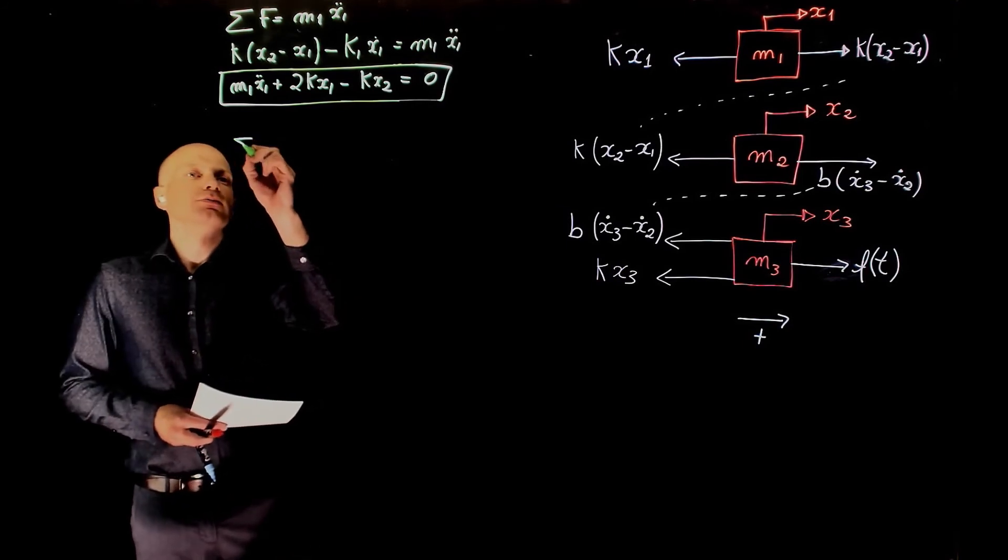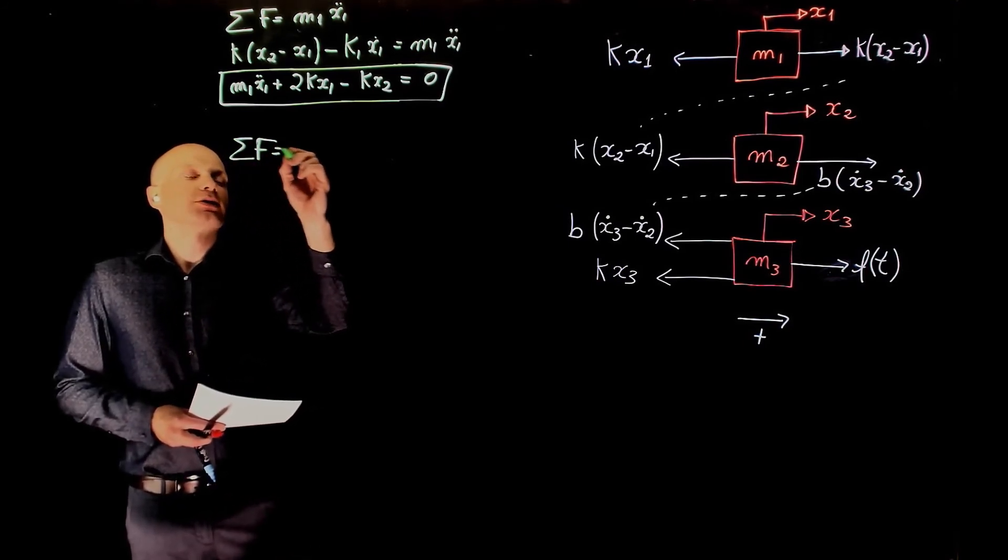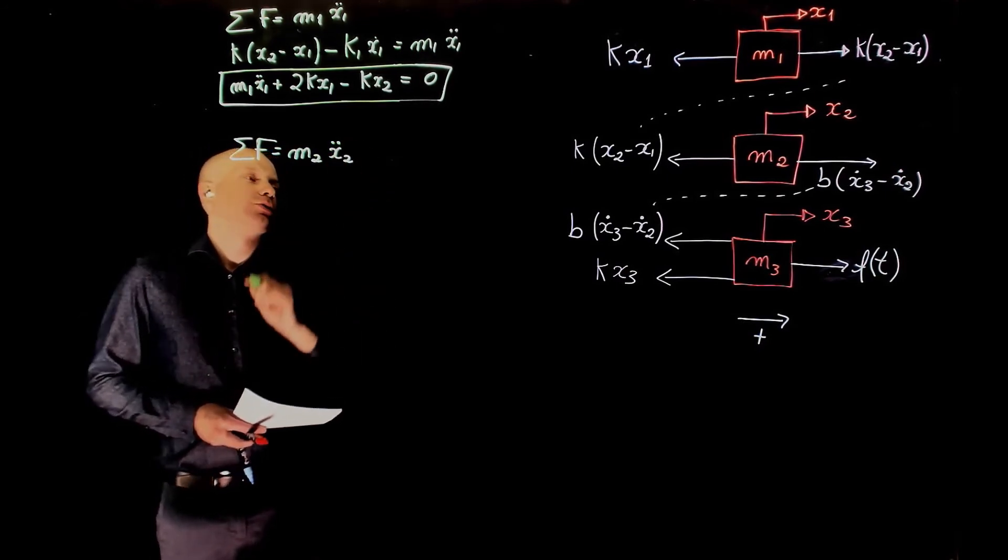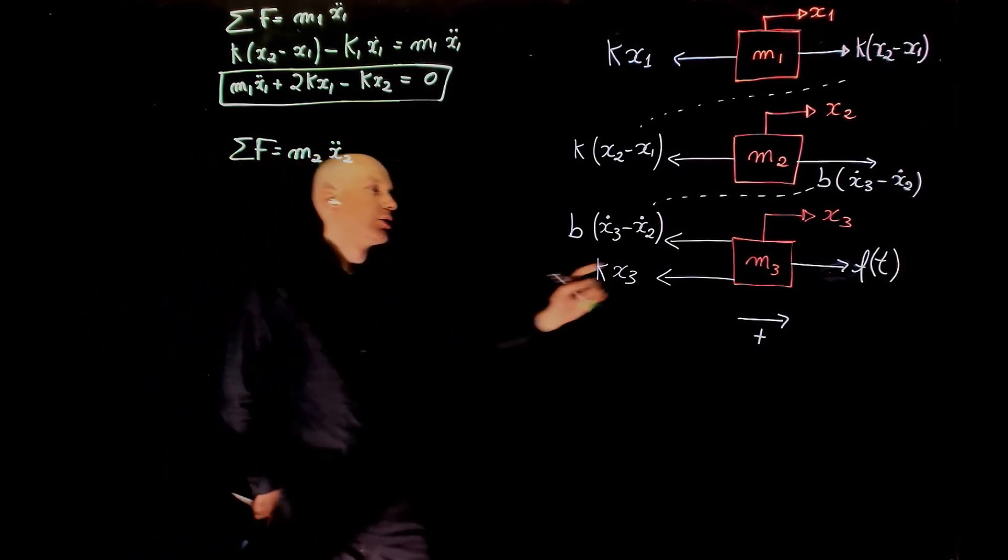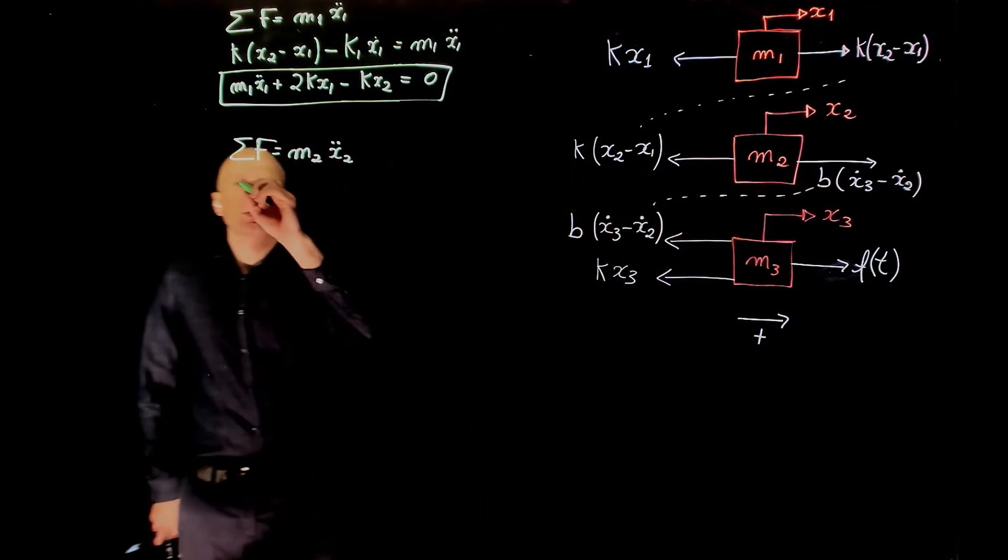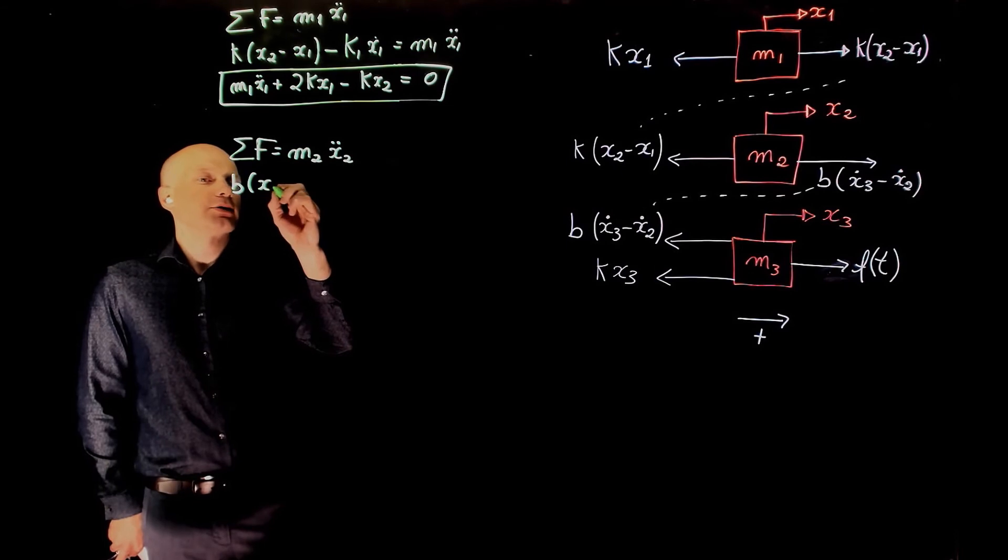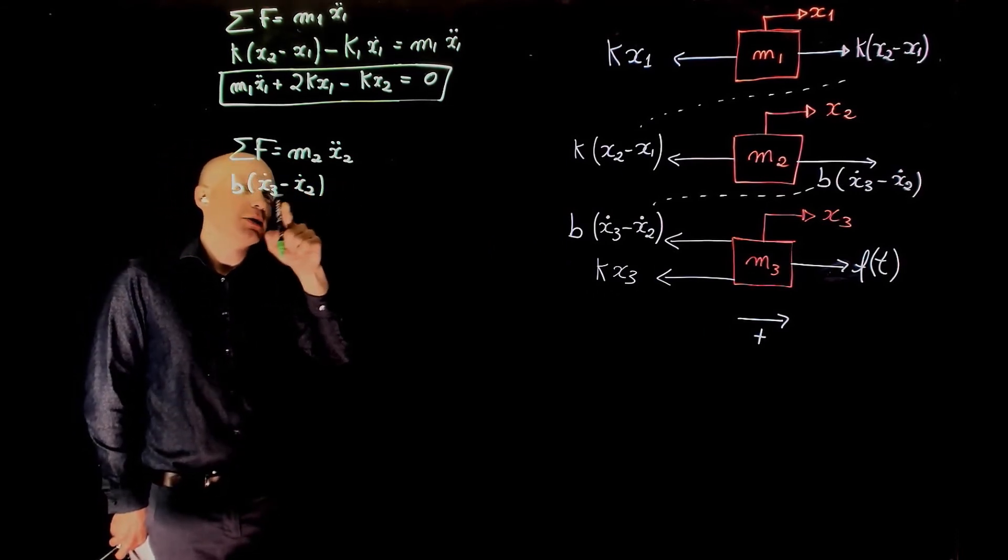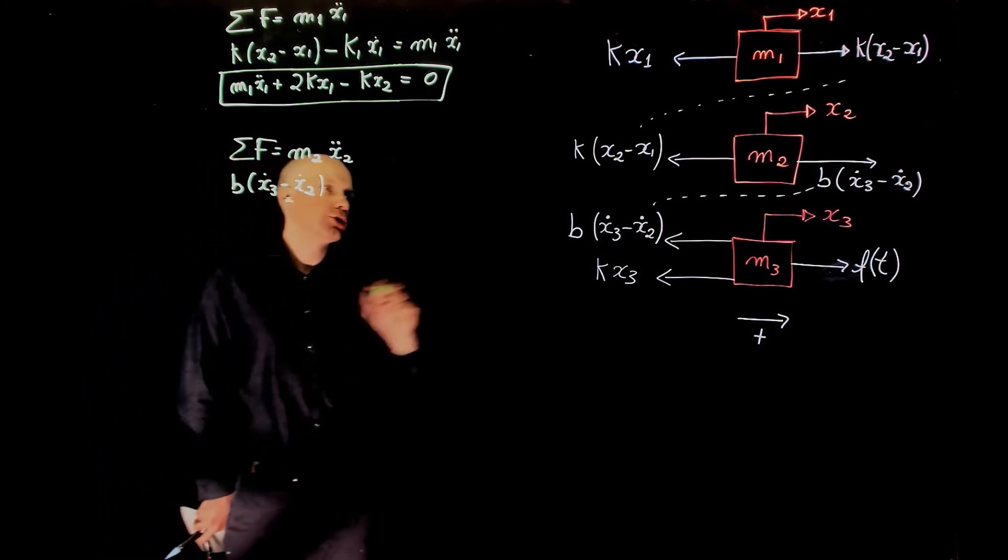For mass 2, we have the sum of forces equals to m2 x2 double dot. So for forces, we have two, we have a positive and a negative force: b(x3 dot minus x2 dot). This again is the speed, this is coefficient of viscous friction, not to be mixed with dry friction. It has nothing to do with dry friction.